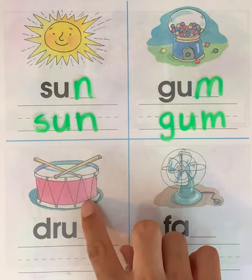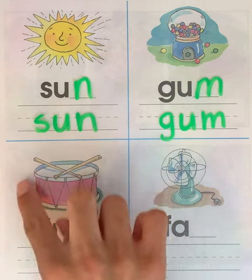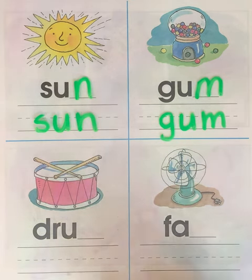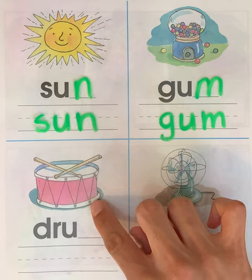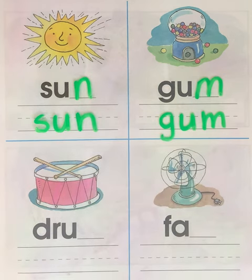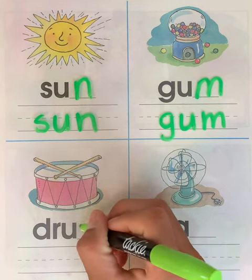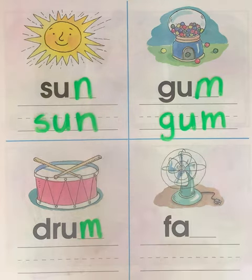This is a picture of — what's the name of this? This is a drum. Good. Can you say drum? Drum. What ending sound do you hear in the word drum? I hear the M sound. Drum. Can you say this word with me? Drum.